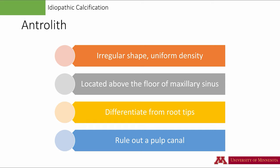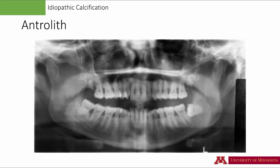An antrolith is a calcification inside the sinus or antrum. These calcifications have an irregular shape and uniform density. Because these are inside the sinuses, we look for radiopacities above the floor of the maxillary sinuses. If there is a missing tooth, we have to rule out a displaced root fragment inside the sinus — root tips are usually conical, so try to identify the presence of a pulp canal. This well-defined circular radiopacity superimposed over the left maxillary sinus does not have the shape of a root tip, and all the roots are present, including the root of the carious maxillary left third molar. The best way to confirm location is to obtain another radiograph at a 90-degree view or cross-sectional imaging such as CBCT.